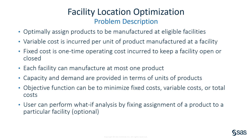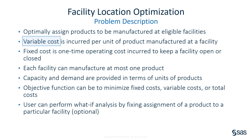Let me talk about the specific problem I'm going to demonstrate today, called the facility location optimization. The problem is to optimally assign products to be manufactured at some eligible facilities, and to decide which facilities to keep open and close. There are costs associated with that — a variable cost incurred per unit of the product manufactured at a facility, and a fixed cost incurred one time for operating a facility. Each facility can manufacture at most one product.